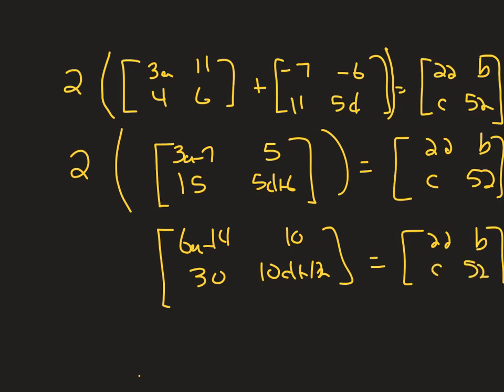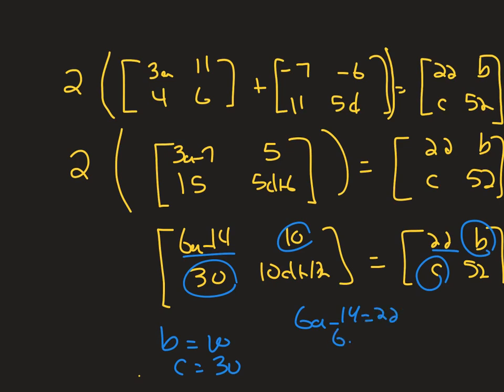Right now, I have a matrix on the left-hand side and a matrix on the right-hand side, and they're equal to each other. The only way they can be equal to each other is if each place value or each element is equal. So for example, let me change colors here real quick. That b right there has to equal 10. So I know b is 10. This c right there, because it's right there, has to equal 30. So I know c is 30. This 6a minus 14 has to equal 22. So I'm going to write 6a minus 14 equal 22. And I'm going to solve that real quick. So a is 6.